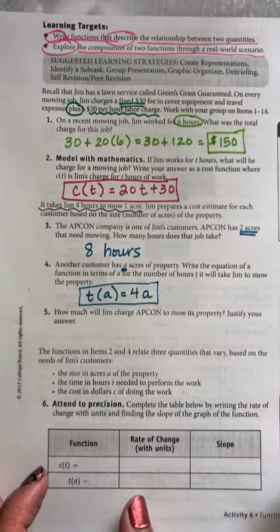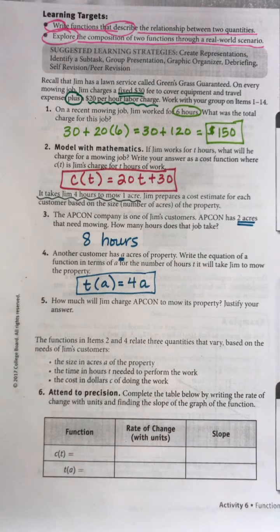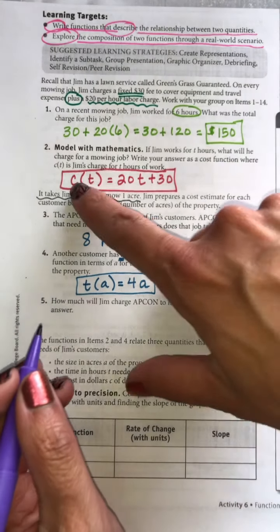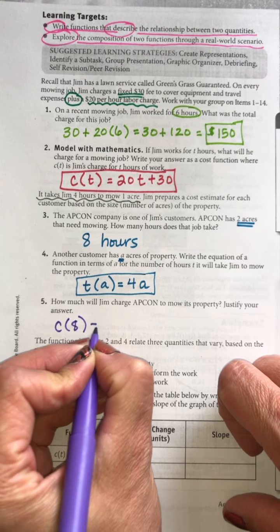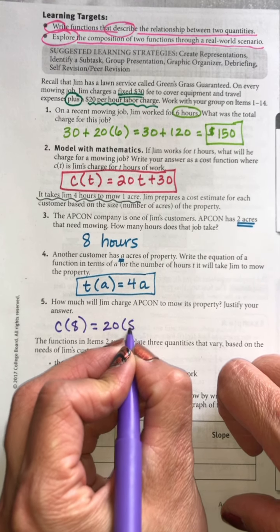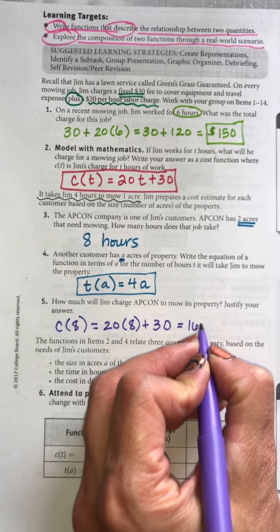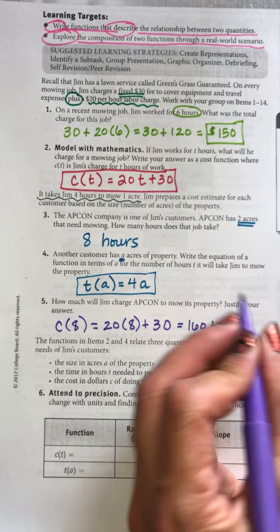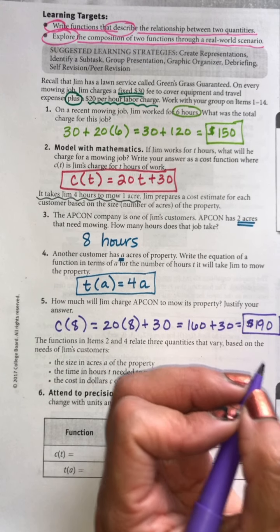Number five: how much will Jim charge Apcon to mow its property? We know it's going to take eight hours to mow the property at Apcon. So the cost is C of 8, which equals 20 times 8 plus 30. Twenty times eight is 160; add 30 to that. It's going to cost Apcon $190 for Jim to mow their property.